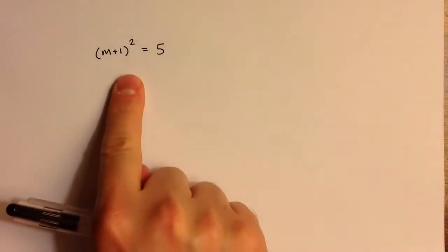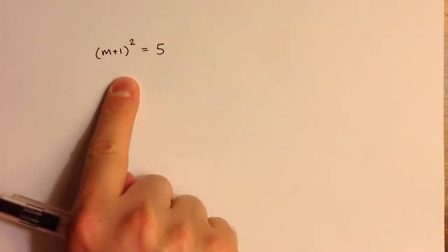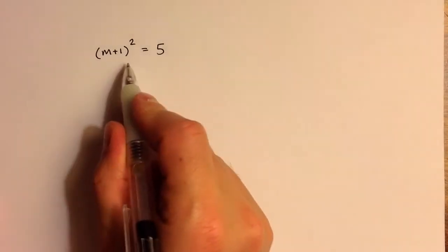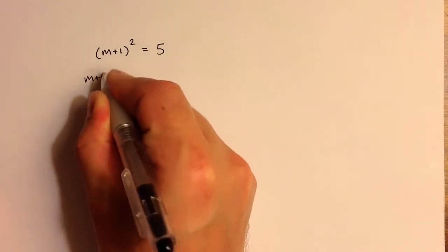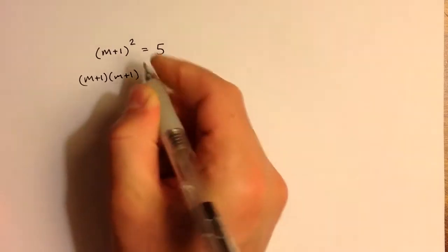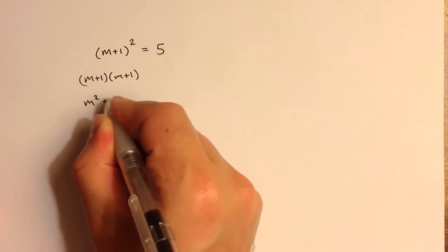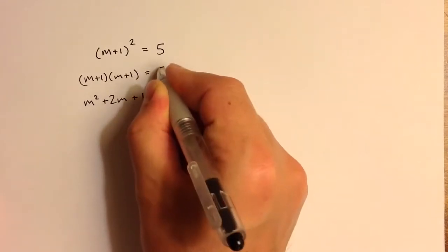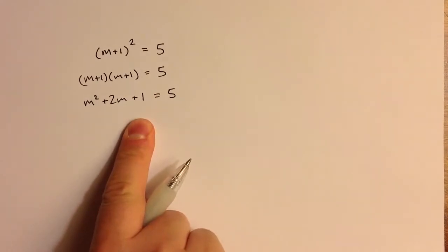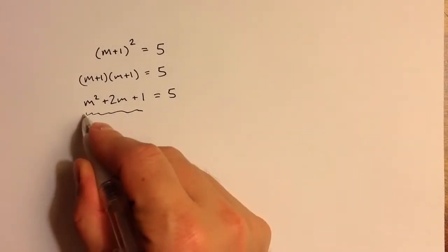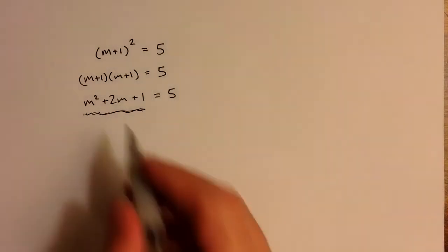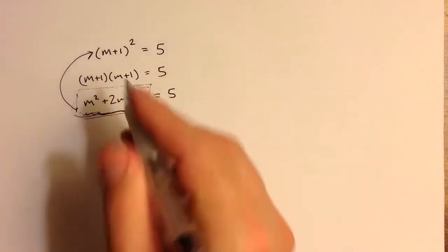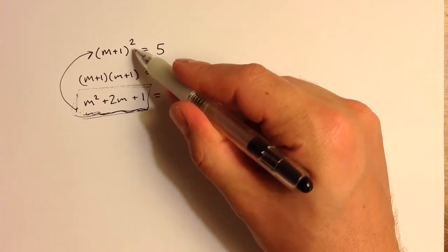In another video, I took a look at how to solve this problem: m plus 1 squared equals 5. If we multiply out m plus 1 times m plus 1, we get what's called a perfect square trinomial: m squared plus 2m plus 1, and then equals 5 on the other side. This is called a perfect square trinomial, and thinking about that fact — the fact that this is a perfect square — it allowed us to take the square root of that expression.